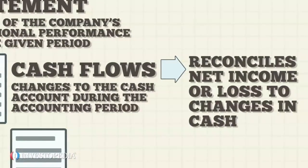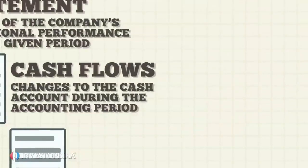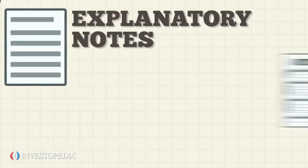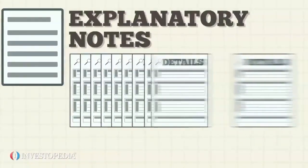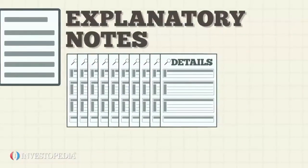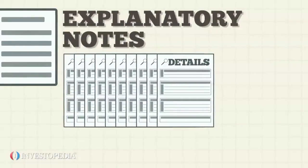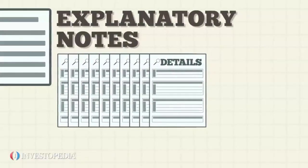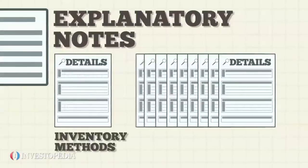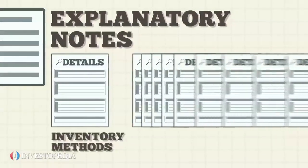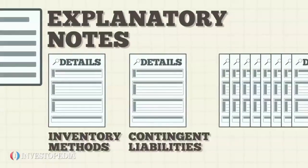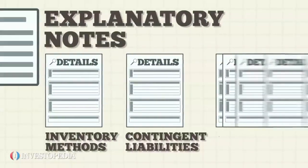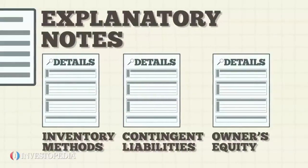The final section of the financial statements is the explanatory notes. These notes provide more detail about various line items in the financial statements, such as inventory methods used, contingent liabilities, and owner's equity.